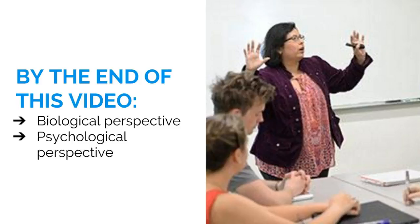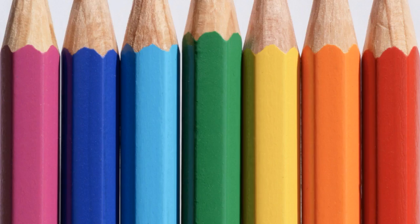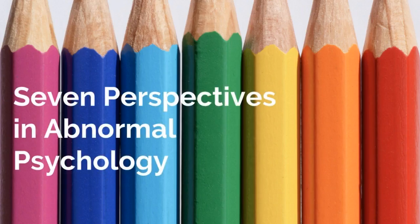Please feel free to pause the video at any time to take notes. What causes an anxiety disorder? How do these disorders develop? The word etiology is just a fancy word for cause or the origin of a disorder. Thus, we are curious to find out how anxiety disorders develop. Please recall that there are seven different perspectives in abnormal psychology. The etiology of disorders will arise from any one of these seven perspectives.